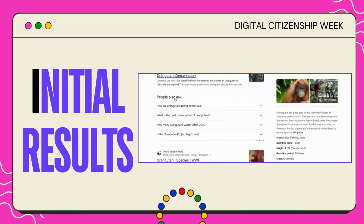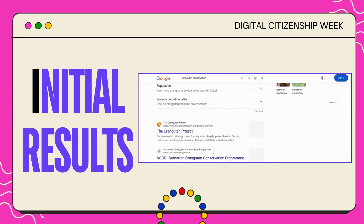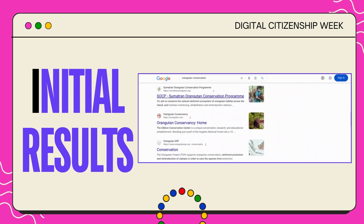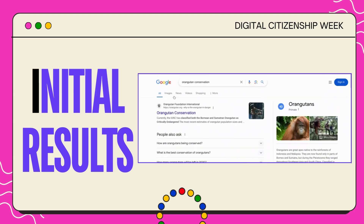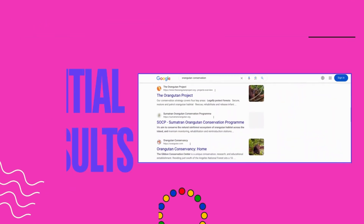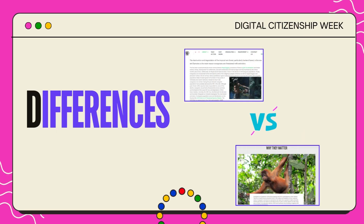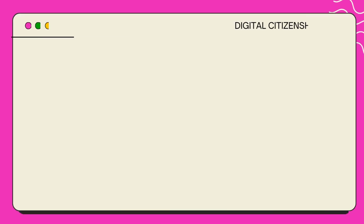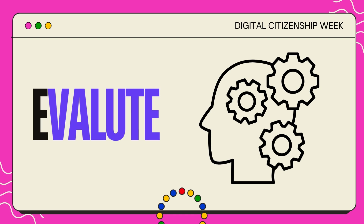Do they have any biases? Explore the About section as a start and investigate a bit. I is for Initial Results: when you search this topic, are the initial search engine results from credible sources? What information do these results provide? D is for Differences: note any significant differences in the facts, evidence, and perspectives between your original source and the search results. And finally, E is for Evaluate: use your answers to make an informed and thoughtful decision about the reliability of your first source.